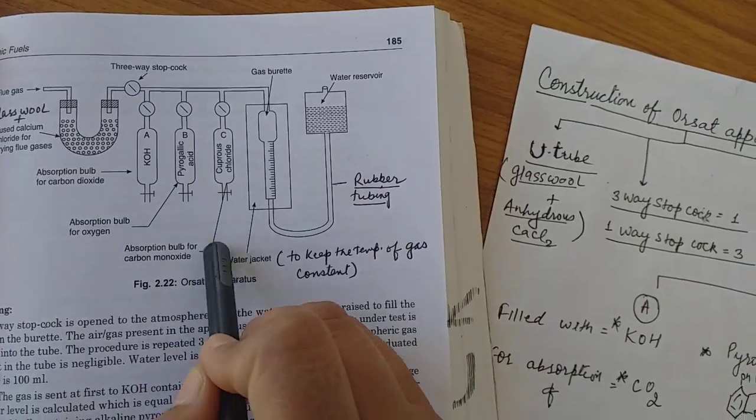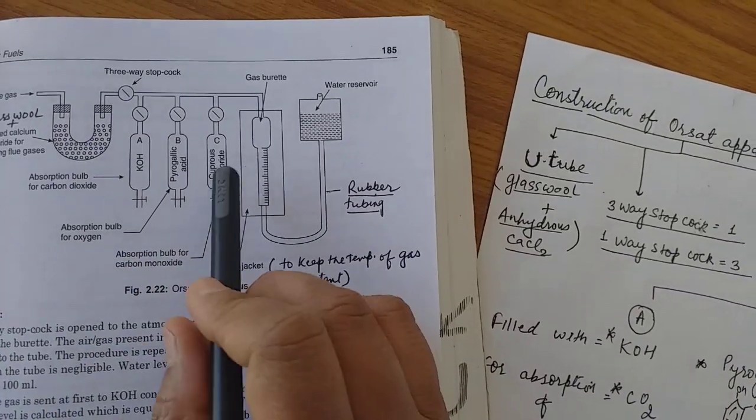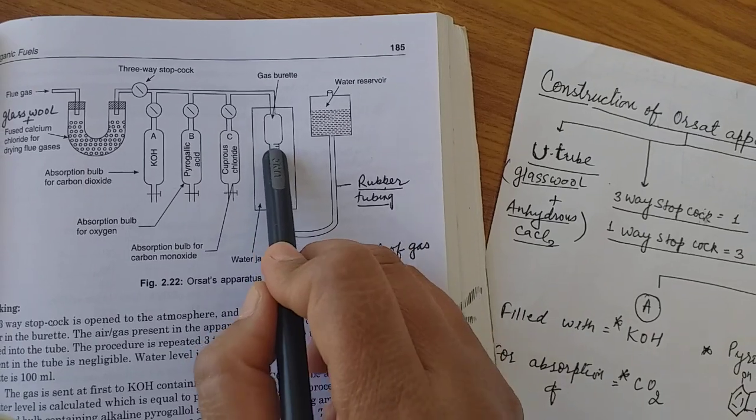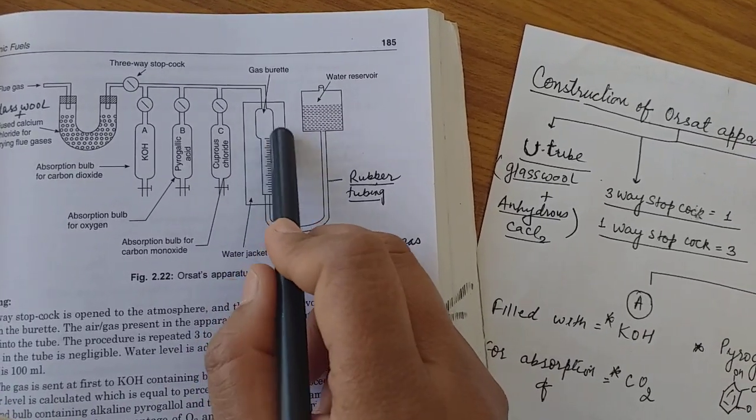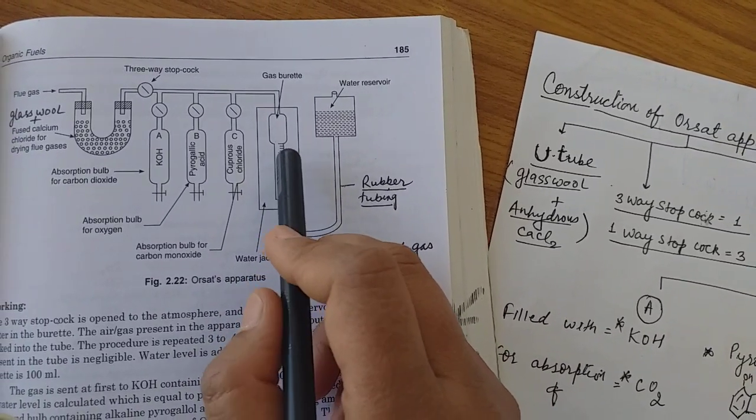After that, it is coming to the third bulb which contains cuprous chloride. Cuprous chloride absorbs the carbon monoxide, and after absorbing carbon monoxide, there is again we will note the level of the water which is decreased here.